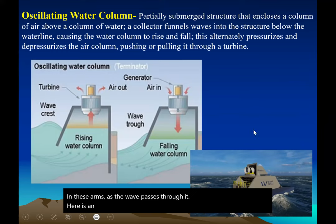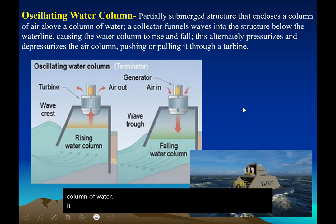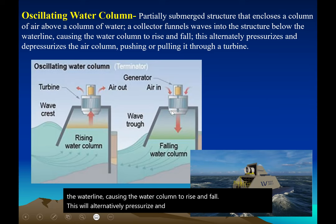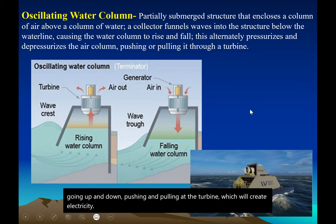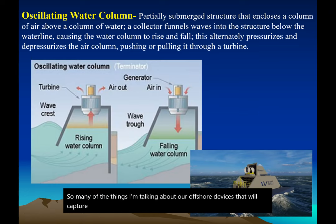An oscillating water column is a partially submerged structure that encloses a column of air above a column of water. It has a collector that funnels waves into a structure below the water line, causing the water column to rise and fall. This alternately pressurizes and depressurizes the air column — pushing and pulling at the turbine — which creates electricity. Many of these are offshore devices capturing ocean wave or current energy to create electricity.